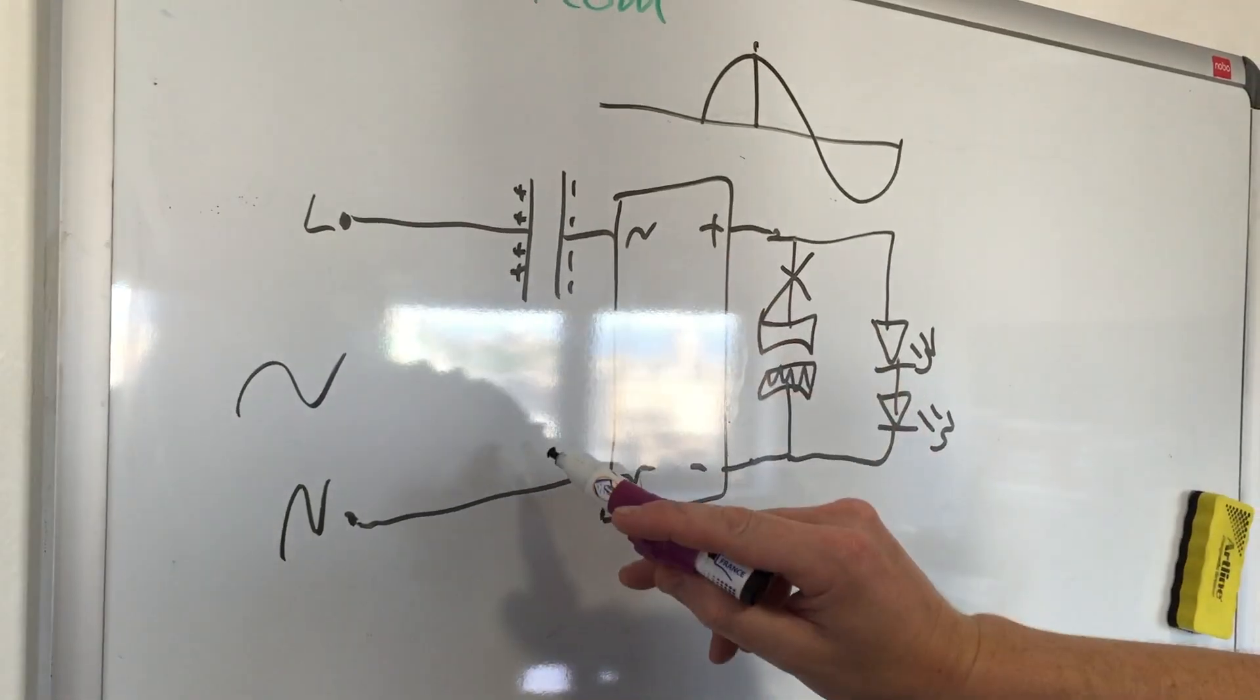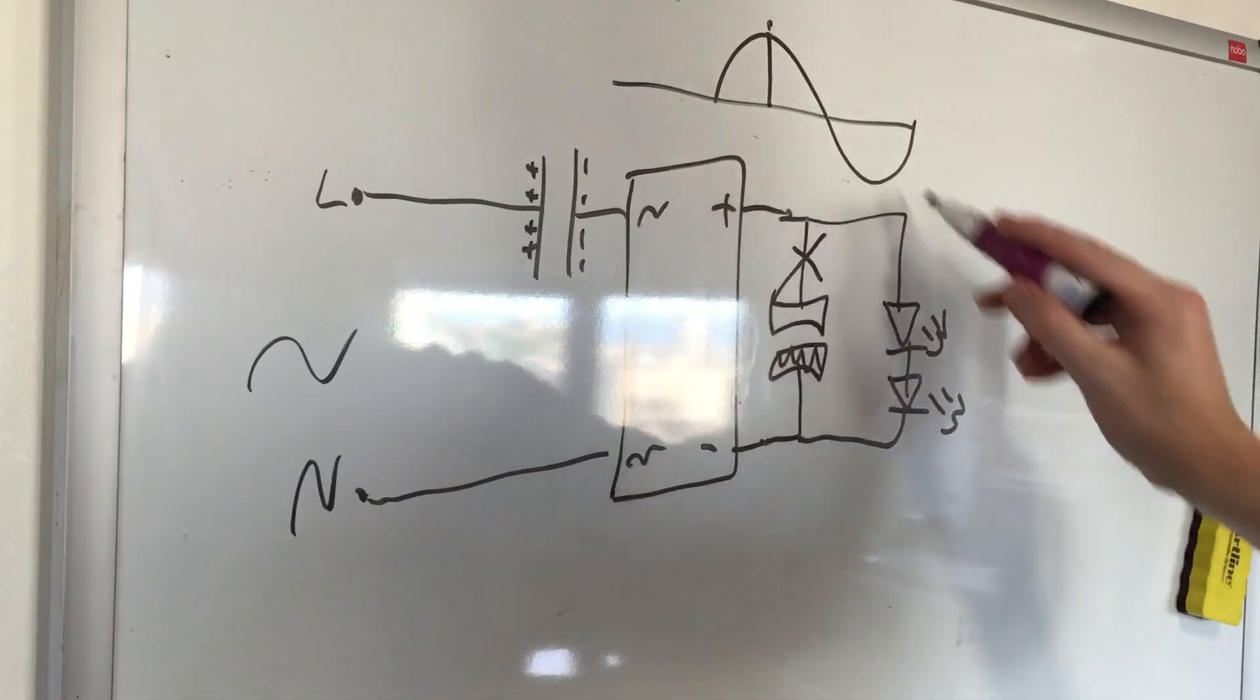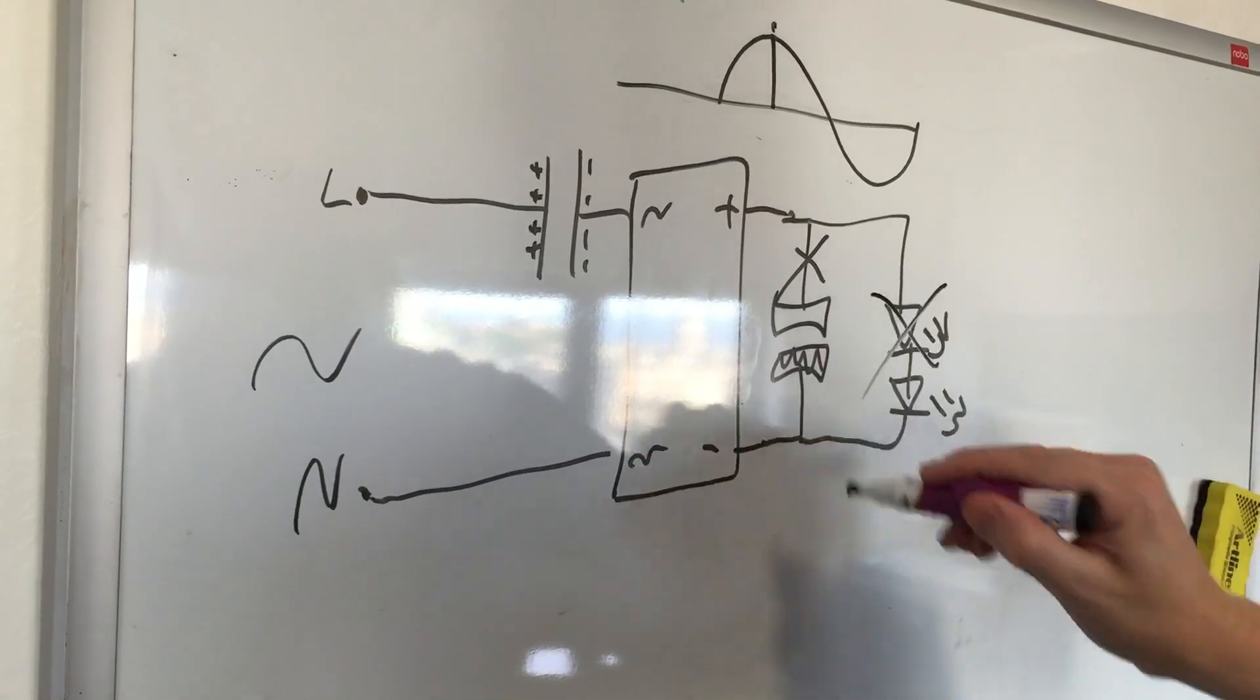And what happened there is you get a very high pulse of current. And because that didn't flow into this capacitor but went through the LEDs instead, it actually damaged the LEDs.